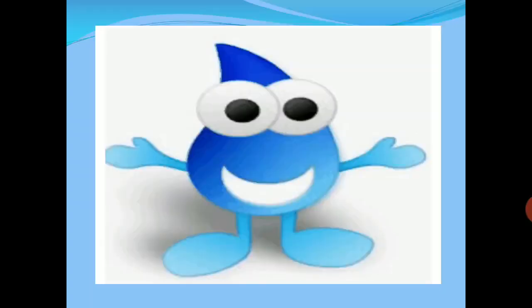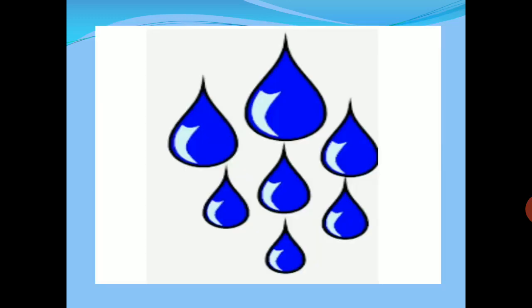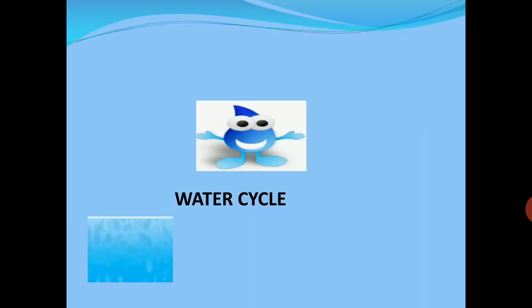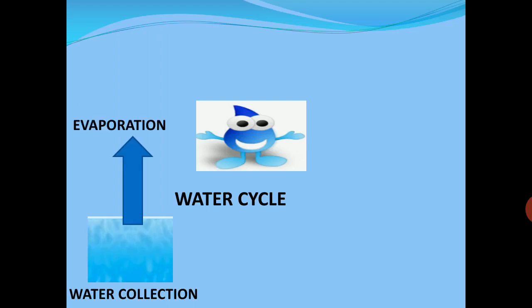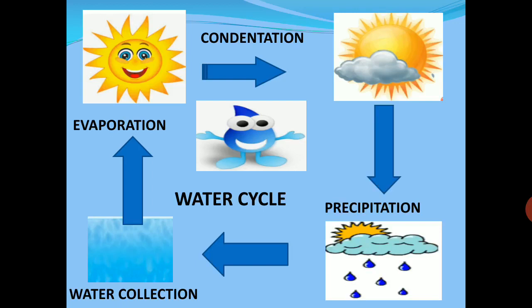Hello friends, I am a drop of water. Many water droplets fall down from the cloud and collect in different water bodies. Due to the heat of the sun, we change into vapor and move to the sky to form clouds, and again come down in the form of rain. This is called the water cycle. The water cycle consists of four steps: water collection, evaporation, condensation, precipitation, and again water collection.